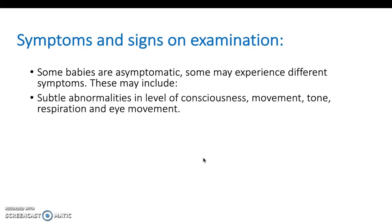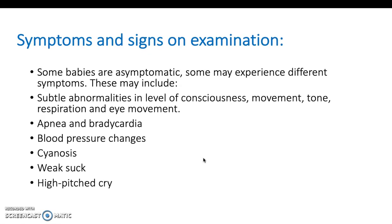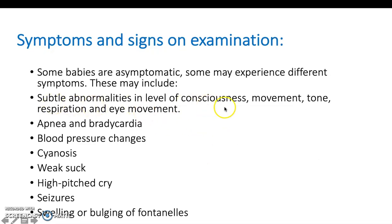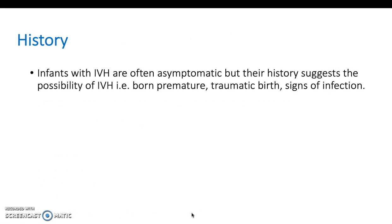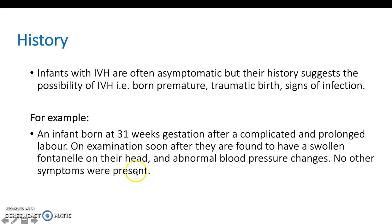Symptoms to look out for — especially after a difficult delivery — include subtle signs such as altered conscious level, changes in movement and tone, blood pressure changes, cyanosis, weak sucking reflex, high-pitched cry, and seizures. Swelling or bulging of the fontanelles is a really important sign. For history, ensure a thorough birth and pregnancy history, asking about prematurity, traumatic birth, and signs of infection. For example: a 31-week gestation premature baby with complicated prolonged labour, swollen fontanelles, and abnormal blood pressure changes would point toward a differential of IVH.